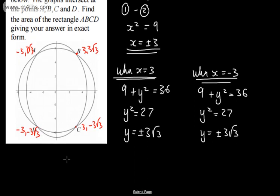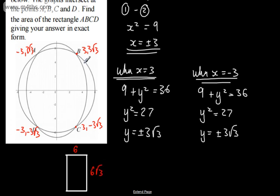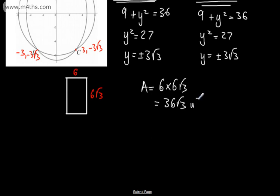Now I'll draw a quick sketch of the rectangle. The horizontal length is the difference in x-coordinates: 3 minus negative 3 equals 6. The vertical width is the difference in y-coordinates: 3 root 3 minus negative 3 root 3 equals 6 root 3. So the area equals length times width: 6 multiplied by 6 root 3, which in exact form is 36 root 3 units squared.